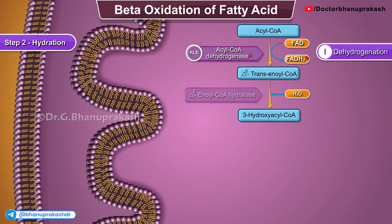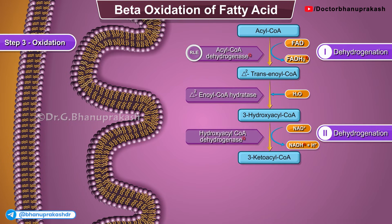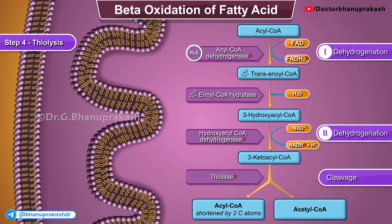Step 2 is Hydration. Addition of a water molecule converts delta-2-trans-enoyl-CoA to 3-hydroxyacyl-CoA. The reaction is catalyzed by delta-2-enoyl-CoA hydratase. Step 3 is Oxidation, the second dehydrogenation. The 3-hydroxyacyl-CoA undergoes further oxidation to form 3-ketoacyl-CoA. This reaction is catalyzed by hydroxyacyl-CoA dehydrogenase, and 1 NADH is formed. Step 4 is Thiolysis, also known as cleavage. This is the final step of beta-oxidation. Cleavage, or thiolysis, releases an acetyl-CoA molecule. This reaction is catalyzed by the enzyme thiolase.